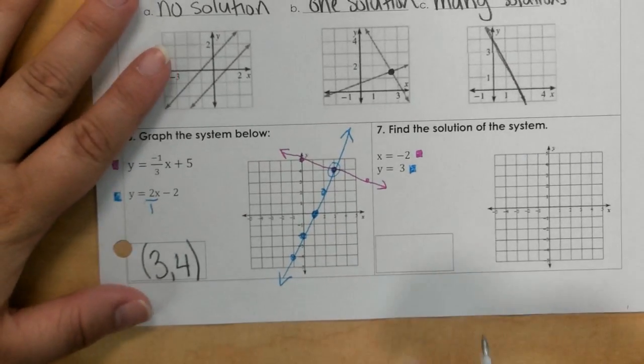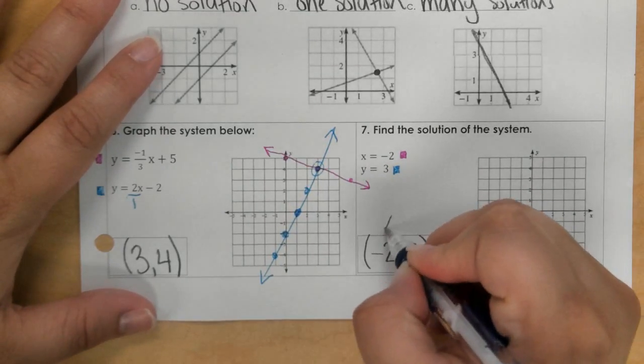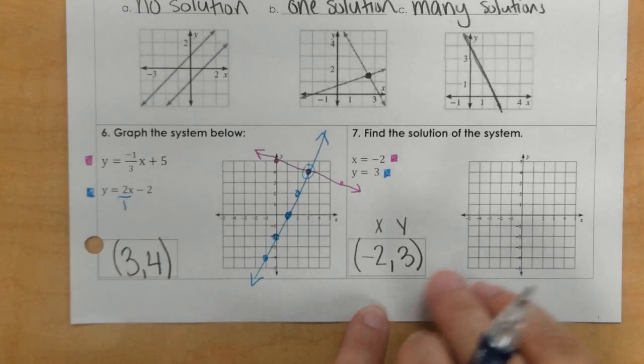So at number 7, my answer would be negative 2, 3. I would follow the x, y ordered pair pattern there.